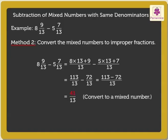Now, to convert 41 upon 13 into a mixed fraction, we divide the numerator 41 by denominator 13. We get the quotient as 3 and the remainder as 2.